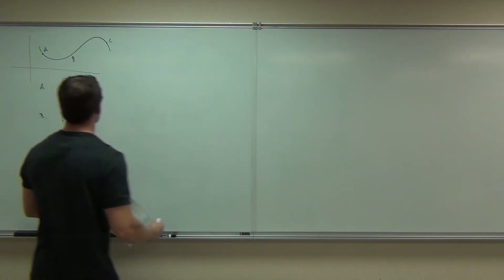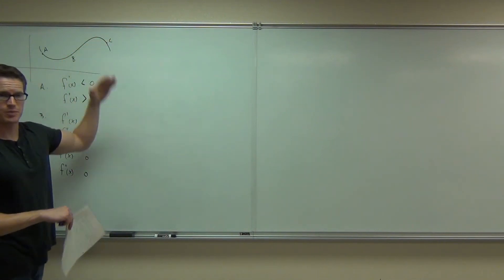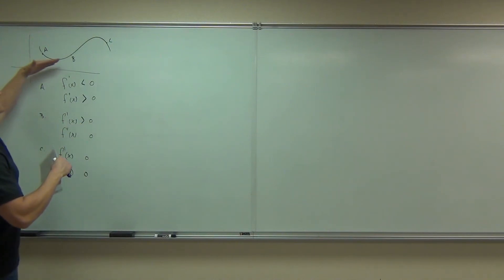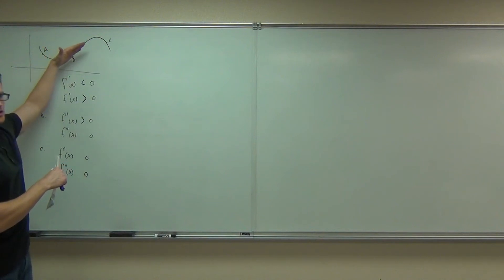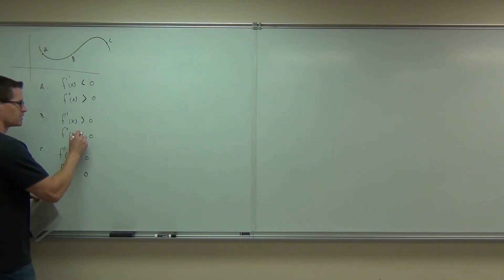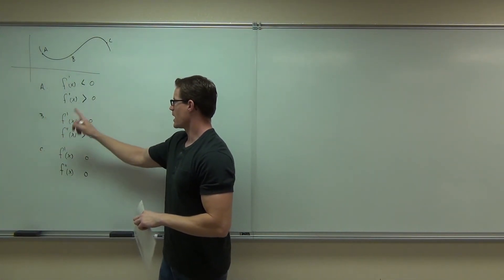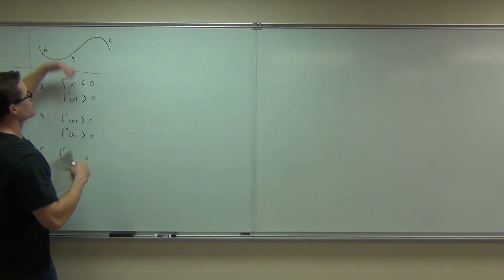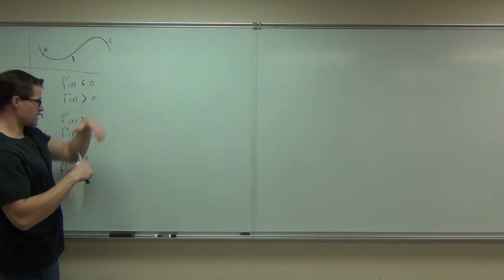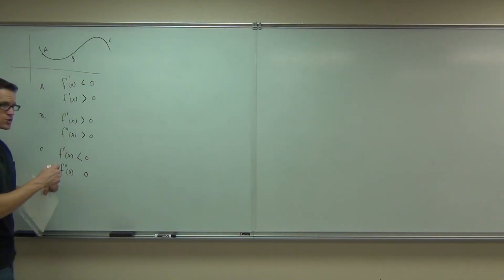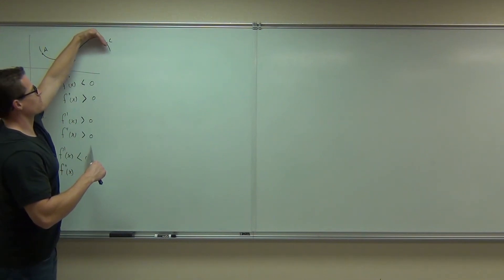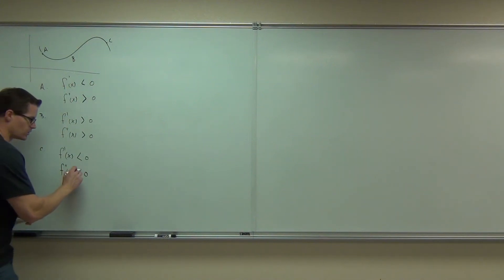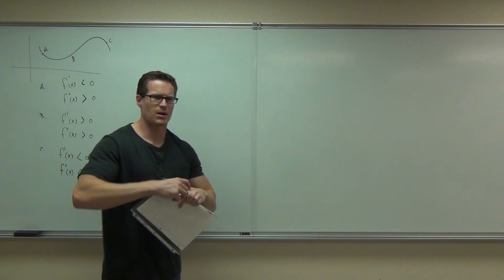At point B, my function is increasing — my slope is positive, so the first derivative should be positive. At point B, the slope is still increasing right there, so the second derivative is also positive. Increasing and concave up. At point C, my function is decreasing — my slope is negative. And also my slope is getting gradually less and less, so my slope is decreasing as well. If my slope is decreasing, that's negative — concave down as well.